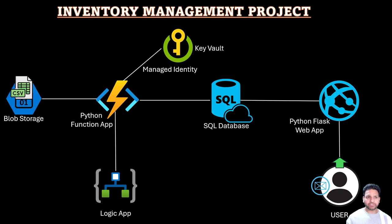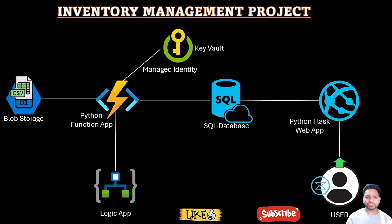In the second video I created the Azure Blob Storage account and Azure Python Function App, which means whenever a CSV file is uploaded into the Blob Storage account, automatically the Python Function App will be triggered. For now I provided the bare minimal code just showing that a file is uploaded into the Blob Storage account. If you haven't checked those two videos, I would highly recommend going to check them and come back here.